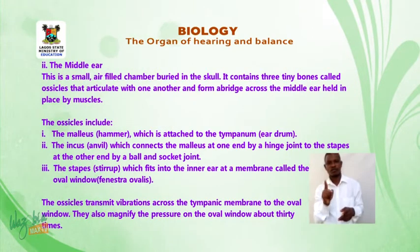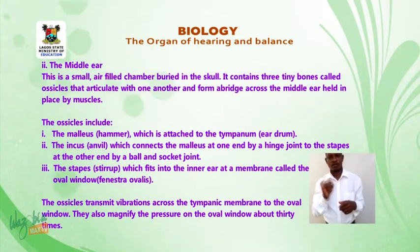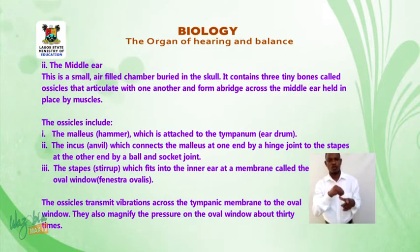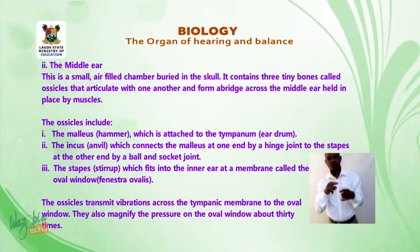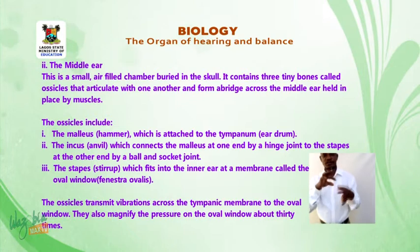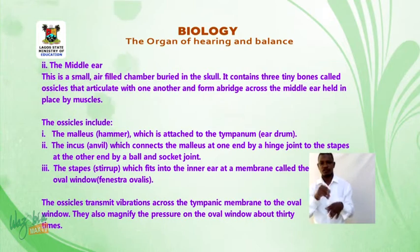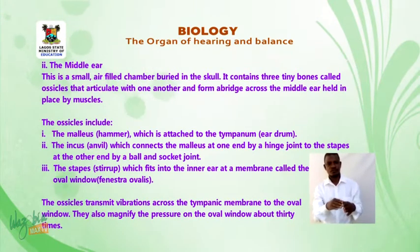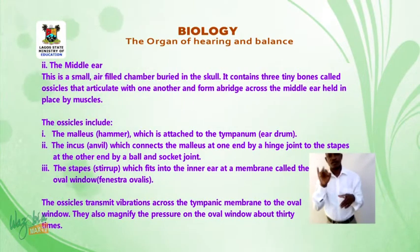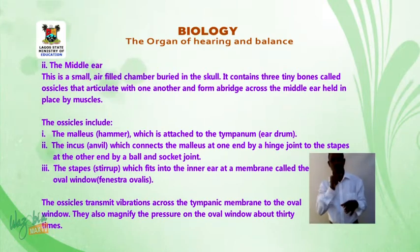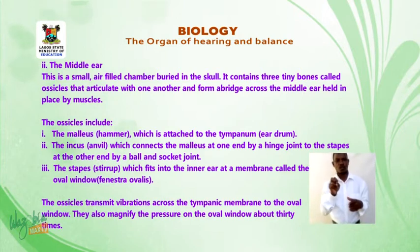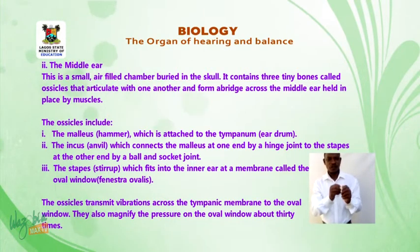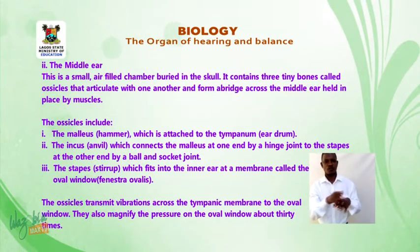The ossicles include: one, the malleus or hammer, which is attached to the tympanum eardrum; two, the incus or anvil, which connects the malleus at one end by a hinge joint to the stapes at the other end by a ball and socket joint; three, the stapes or stirrup, which fits into the inner ear at a membrane called the oval window or fenestra ovalis.